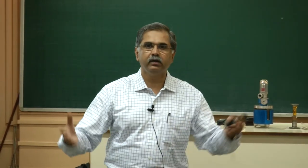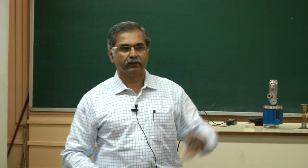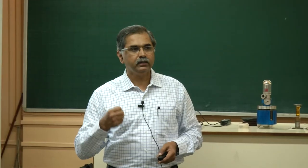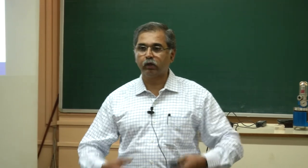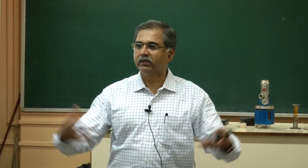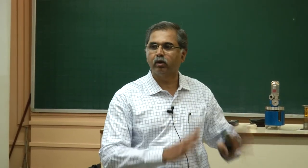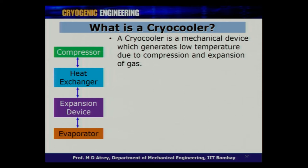Unlike R134a used in home refrigerators which works at around minus 10 degrees Celsius, for cryocoolers the working fluid — most often helium, sometimes hydrogen — gets compressed and expanded. These are closed-cycle devices. Every cryocooler will have a compressor, a heat exchanger, an expansion device, and an evaporator.